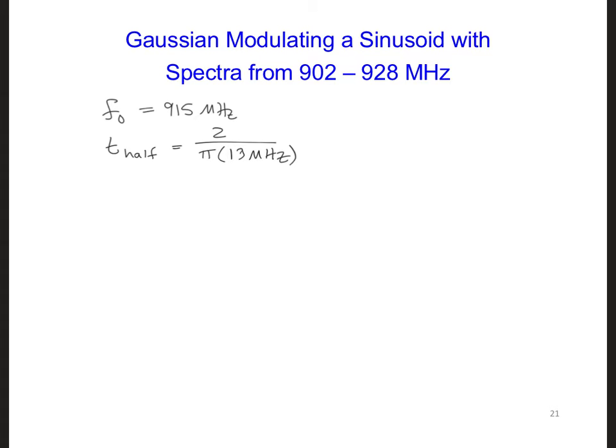We'll just have an abrupt change from 0 to the maximum amplitude of our Gaussian modulating a sine. So it might look something like this. Just the second half of it is what we'll see.